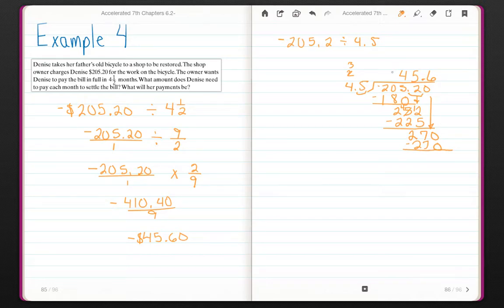Now it's money and it's negative. So it has to have two decimal places. There is your monthly payment.